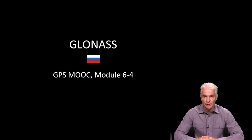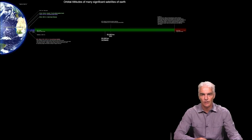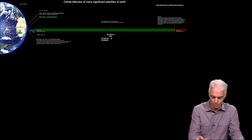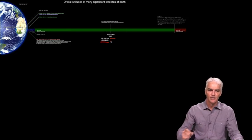GLONASS is also an acronym like GPS. It's a Russian acronym that stands for Global Navigation Satellite System, and it's operated entirely by the Russian Federation. Its orbits are very similar to GPS as we show here in this picture. We've got GPS there, and GLONASS at a slightly lower orbit.